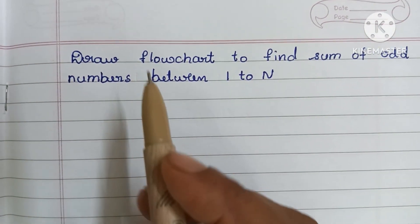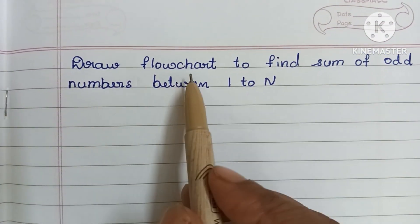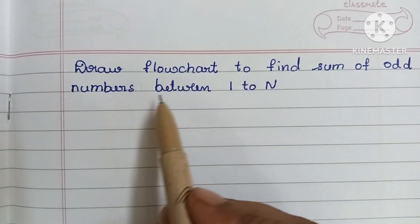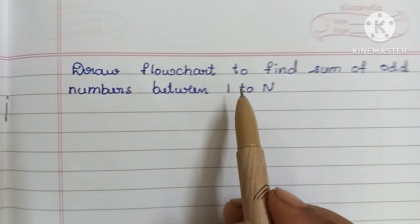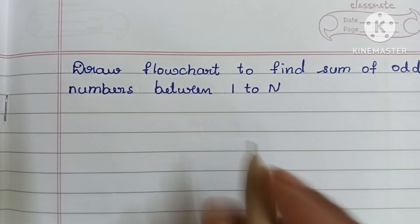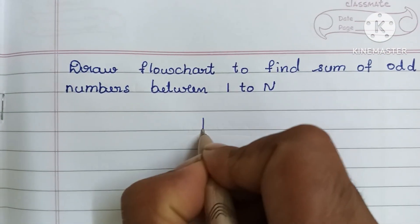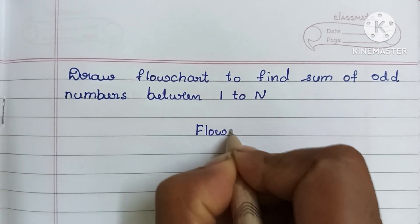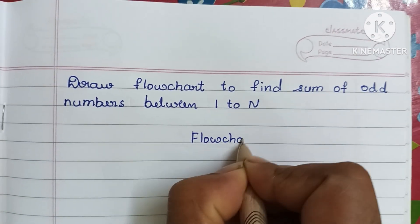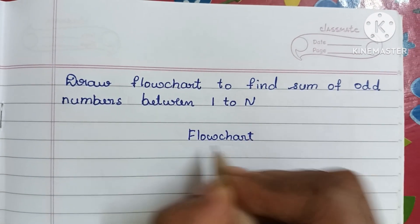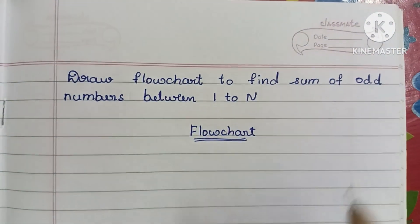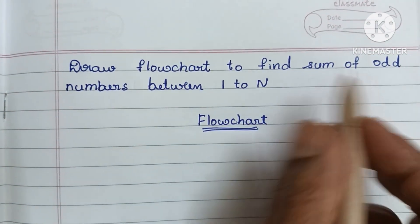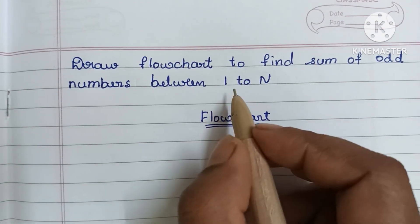Hi guys, in this video we're going to learn how to draw a flowchart to find the sum of odd numbers between 1 to N. A flowchart is a graphical representation of a solved problem. Here we have to find the sum of odd numbers between 1 to N.